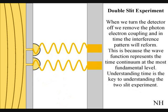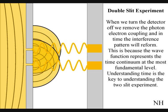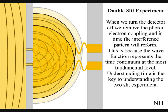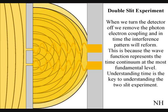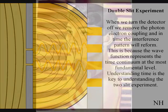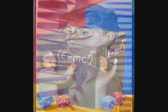If we turn the detector off, we remove the photon-electron coupling, and in time the interference pattern will reform. Just like in Newton's first law of motion, the interference pattern will continue to maintain its state, unless acted upon by an external force.